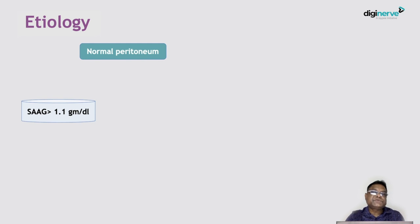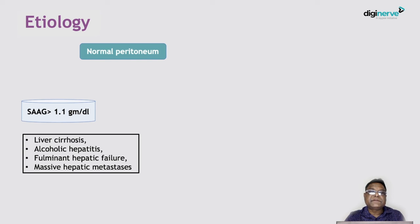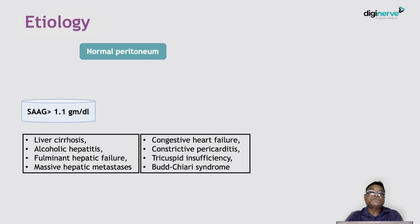A SAAG value greater than 1.1 g/dL with normal peritoneum is most often due to portal hypertension. Common causes include cirrhosis of the liver, alcoholic hepatitis, fulminant hepatic failure, massive hepatic metastasis, congestive heart failure, constrictive pericarditis, tricuspid insufficiency, and Budd-Chiari syndrome.